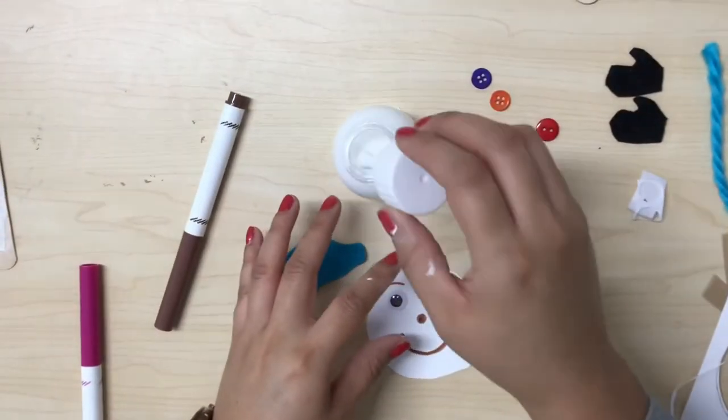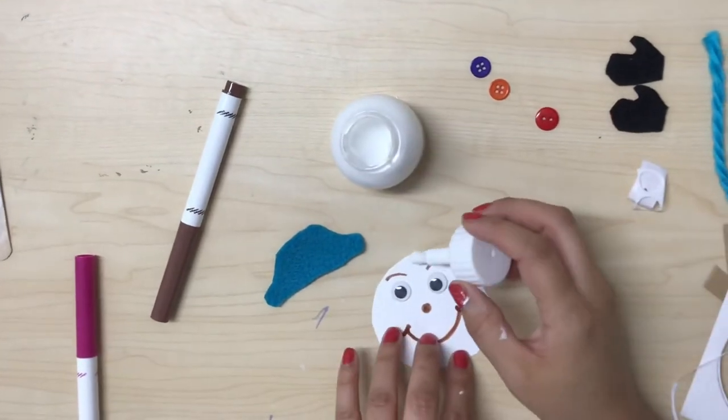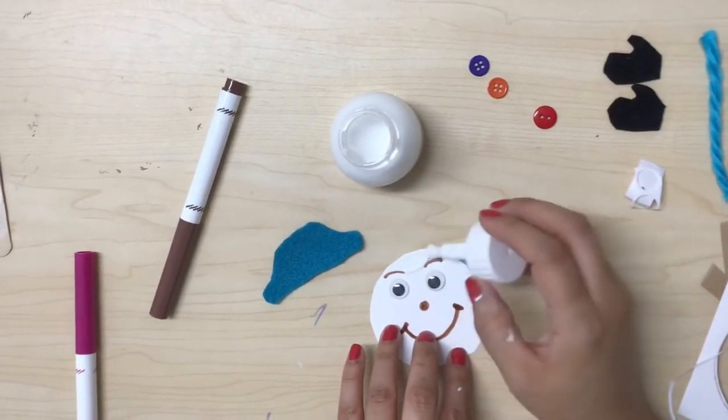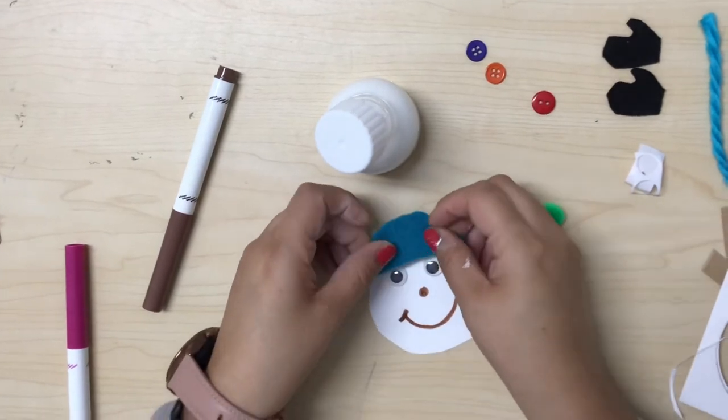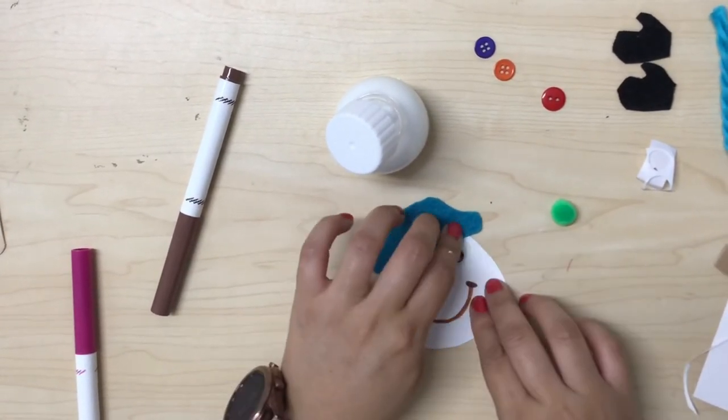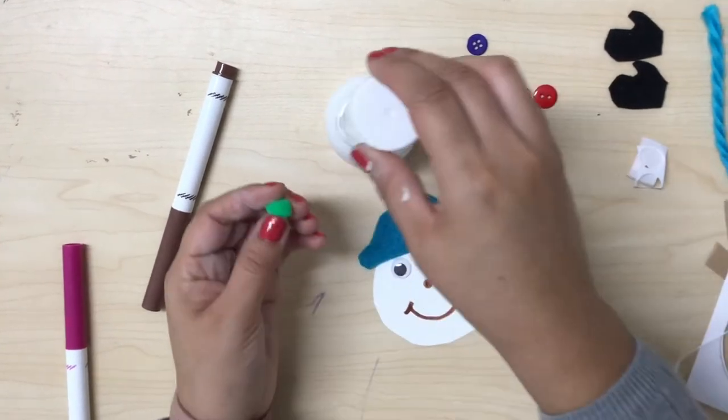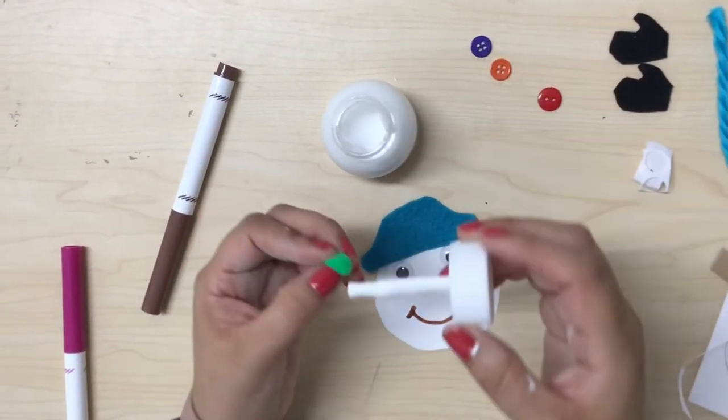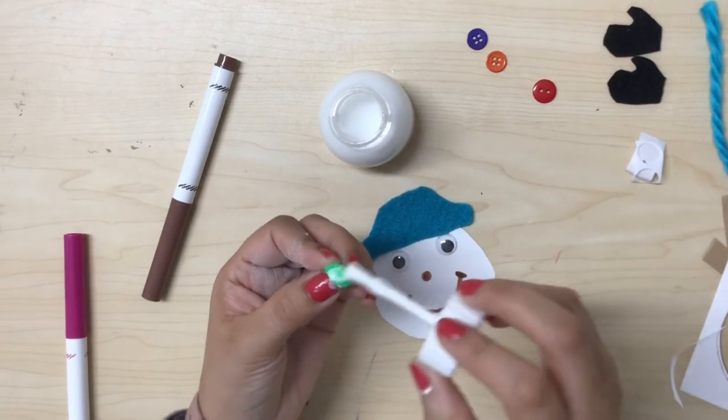Now, I am going to take my glue bottle and I am going to start gluing the hat on the top of the head of my snowman. Then, I am going to glue a pom-pom on the top part of the hat.